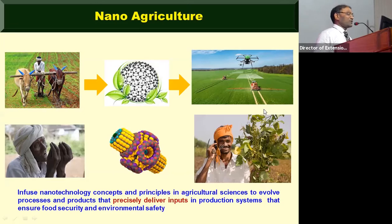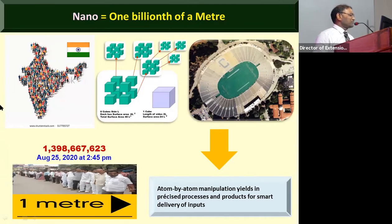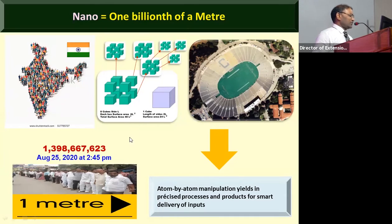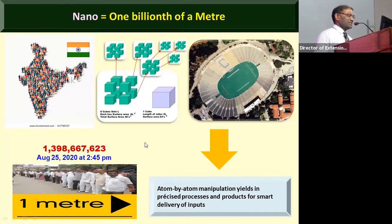For a better understanding, nano is very very small but also very very smart. To illustrate: India is one of the most populous countries in the world, with about 1.398 billion people — roughly 140 crore. If the entire population of India were zipped into one meter of length, each Indian would become a nano-sized particle. That is how small nano is, and with that smallness comes great intelligence.